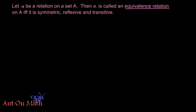From our previous examples, we know that we have equals. Equals is an equivalence relation on the real numbers, or on the integers, or on the natural numbers, or any set of numbers. We use equals as an equivalence relation.